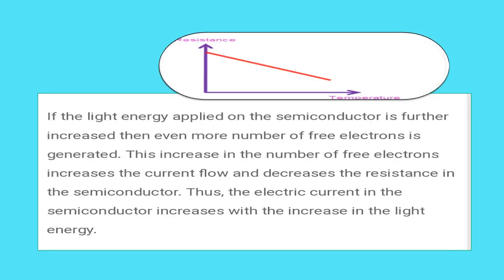Resistance decreases with increase in temperature. If we apply light energy which is further increased, then more free electrons are generated. This increase in free electrons increases the current flow and decreases the resistance in the semiconductor. Thus, the electric current in the semiconductor increases with the increase in light energy.